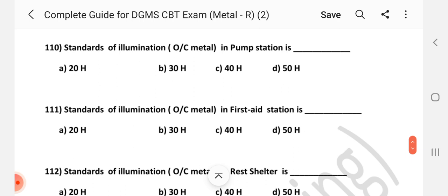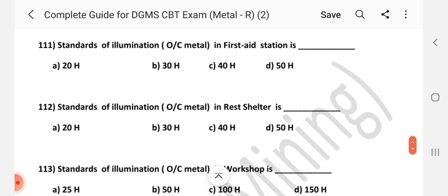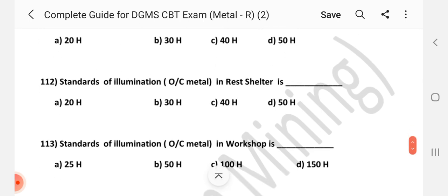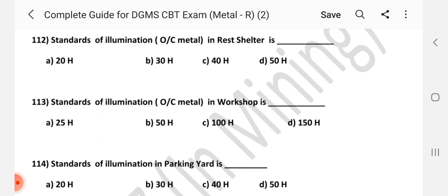Question number 109. Standard of illumination open cast metal in haul roads of tipper or dumper is dash. Question number 110. Standards of illumination in open cast metal mines in pump station is dash. Question number 111. Standards of illumination in first aid station is dash. Answer is D, 50 horizontal.